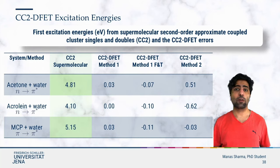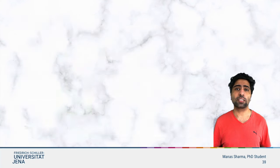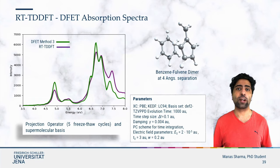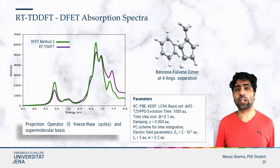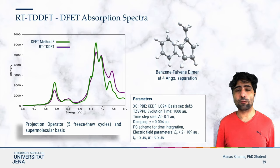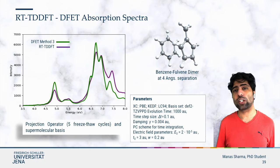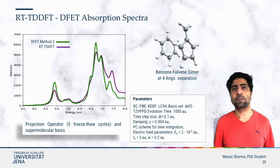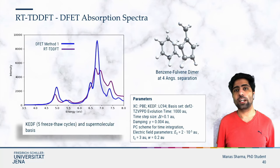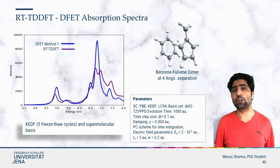Lastly, let us look at the performance of RT-TDDFT coupled with DFET. We consider a system of interacting chromophores — a benzene–fulvene dimer at a separation of 4 Ångströms. We compare absorption spectra obtained using standard RT-TDDFT and DFET method 3 with the projection operator and a supermolecular basis. The DFET spectrum was obtained by considering benzene as cluster and fulvene as environment, and then vice versa. The DFET spectrum reproduces all major features of the reference spectrum with minor differences, arising because the environment density was kept fixed at the ground state and could not respond to cluster excitations. Using the approximate DFET method 1 with KEDFs gives a much larger difference between the reference and the DFET spectrum.